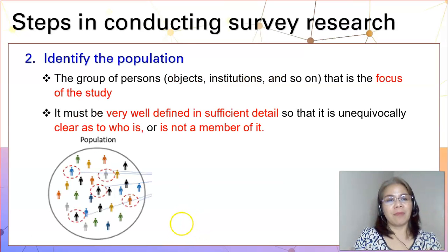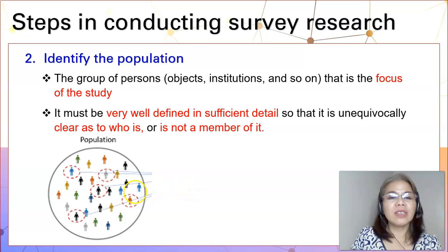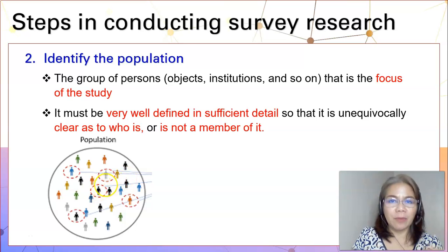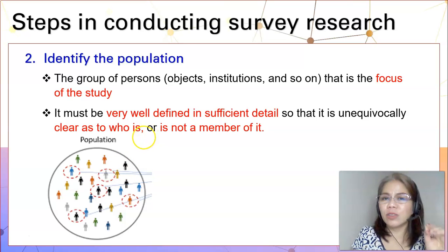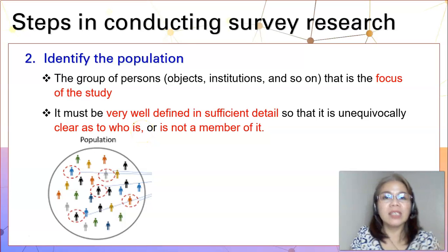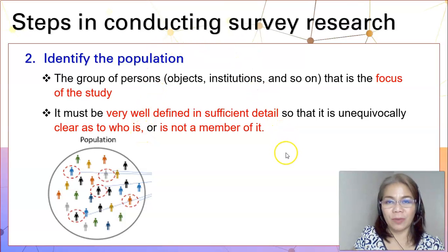The next step is to identify the population. Population is the group of persons that is the focus of your study. In identifying the population, it must be well-defined in sufficient details so that it is very clear as to who is and who is not part of that target population.